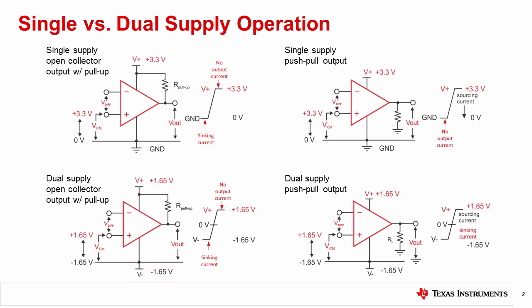For this circuit, the input common mode range and output swing range extends across the supply range from minus 1.65 volts to plus 1.65 volts. Like the single supply circuit, this configuration will require no current when the output is high at plus 1.65 volts, and will sync current when the output is low at minus 1.65 volts.